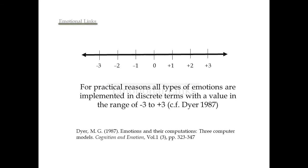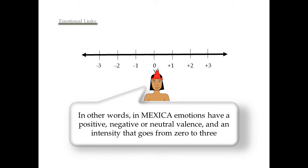Let's talk about emotional links. For practical reasons, all types of emotions are implemented in discrete terms with a value in the range of -3 to +3. In other words, in Mexica emotions have a positive, negative or neutral balance and an intensity that goes from 0 to 3.